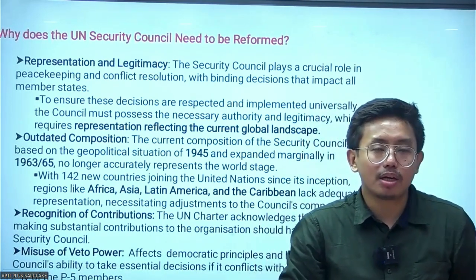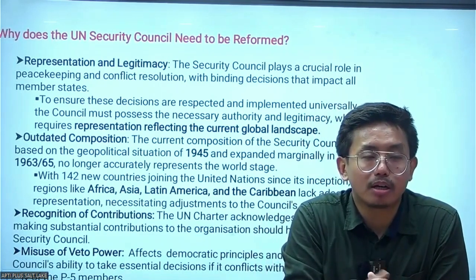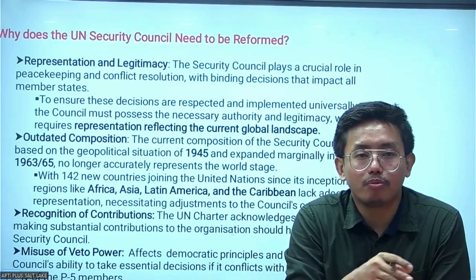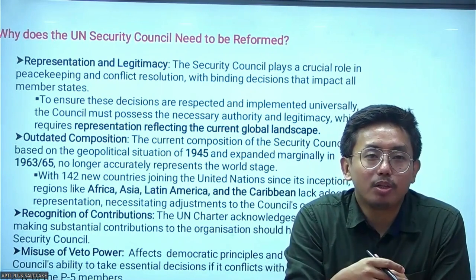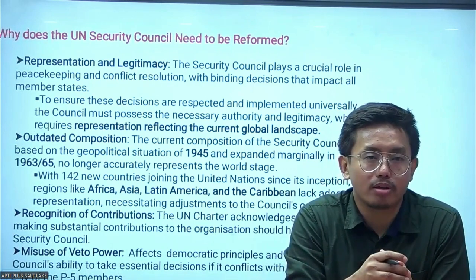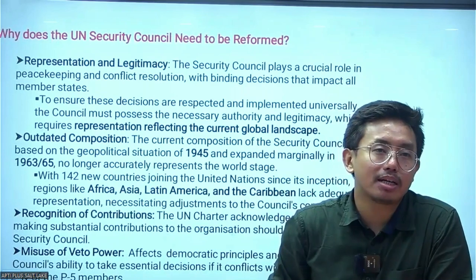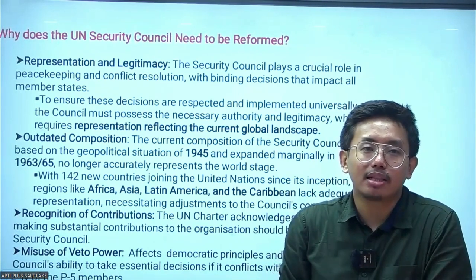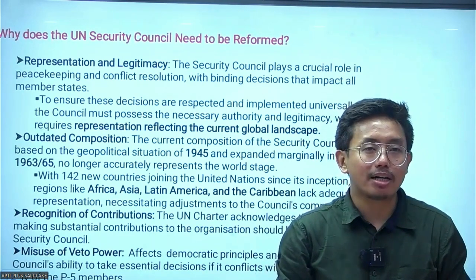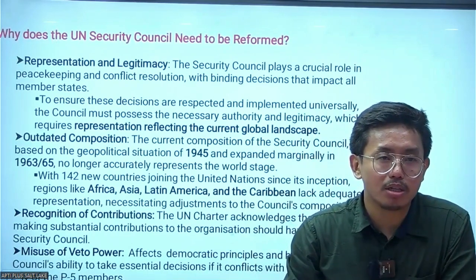The last and most important reason for UNSC reform is the misuse of veto power. The P5 countries — Russia, China, France, Britain, and the US — misuse their veto by blocking UN decisions based on self-interest. This self-interest is obstructing reform in the United Nations, threatening the global power system and global peace.